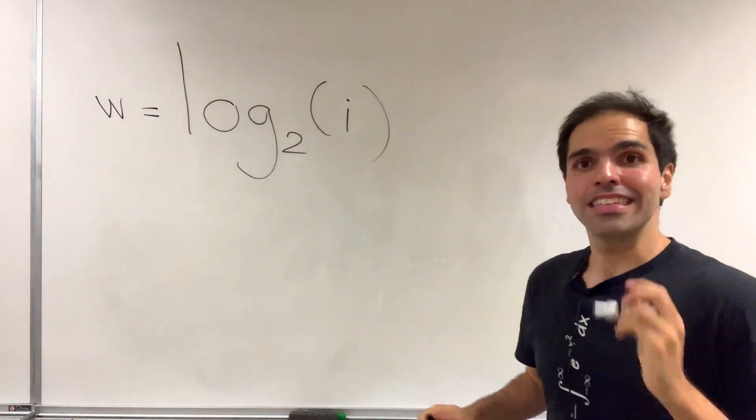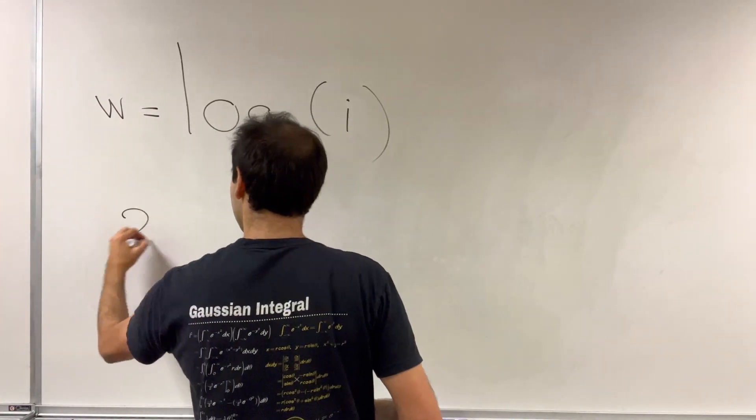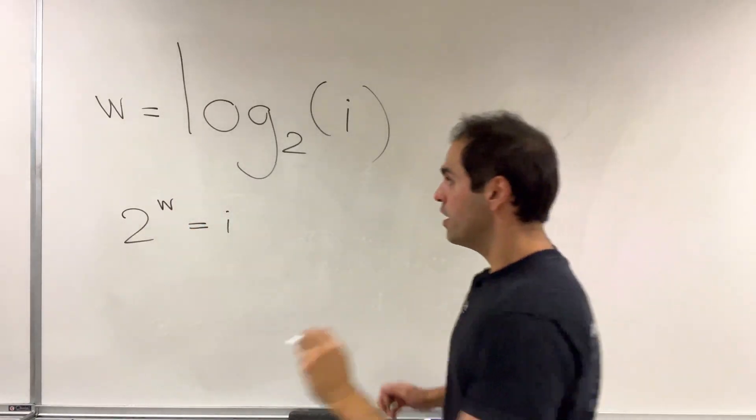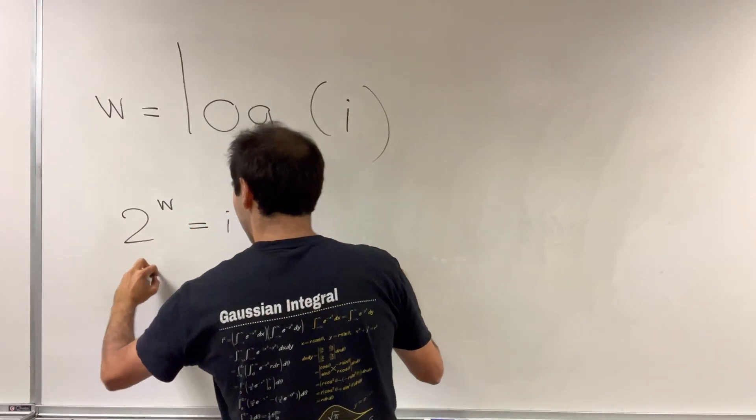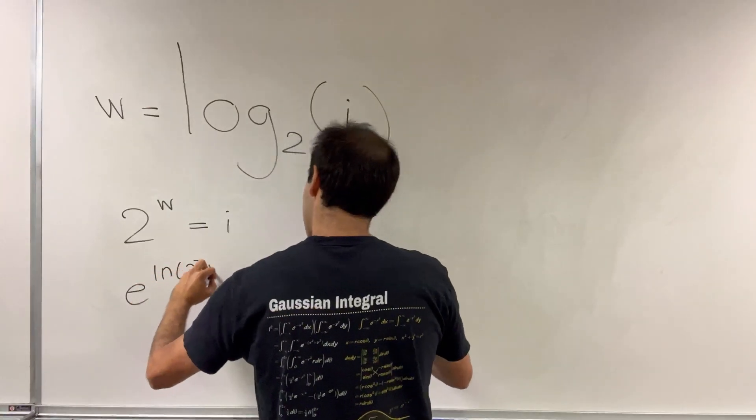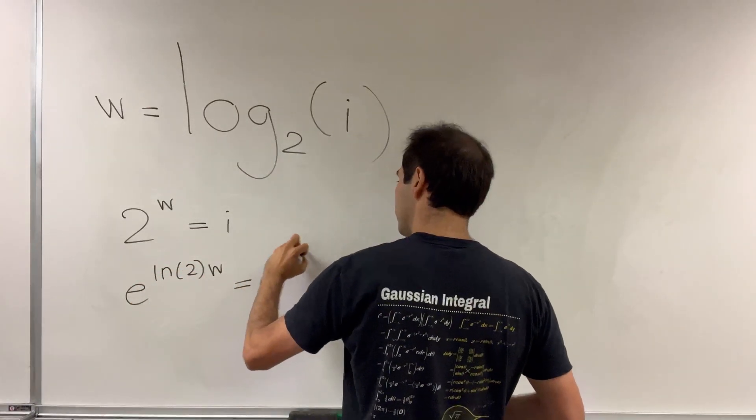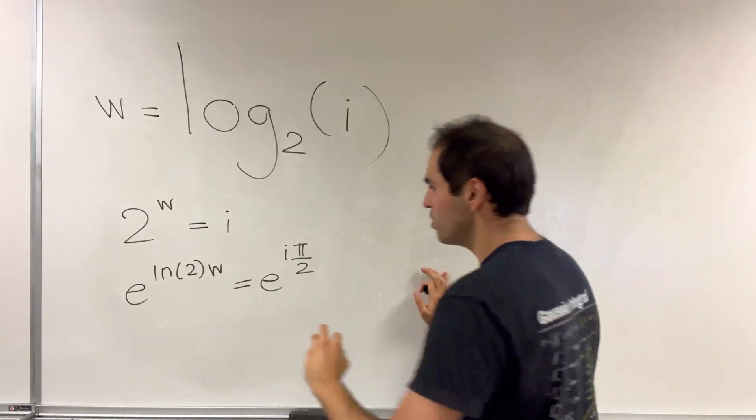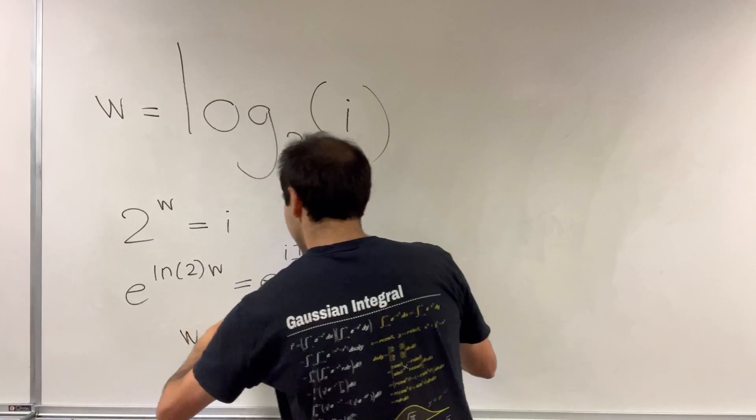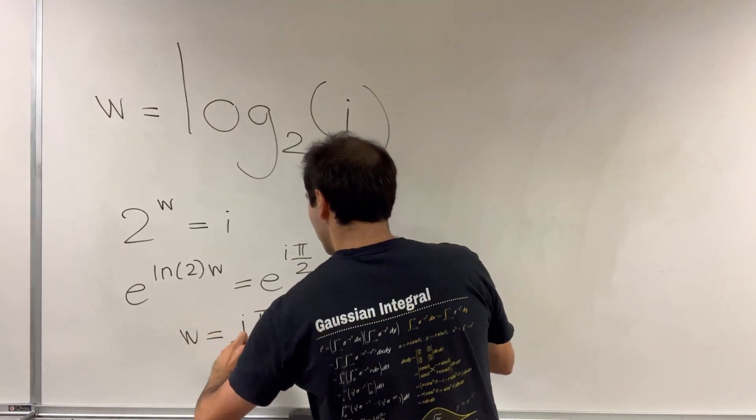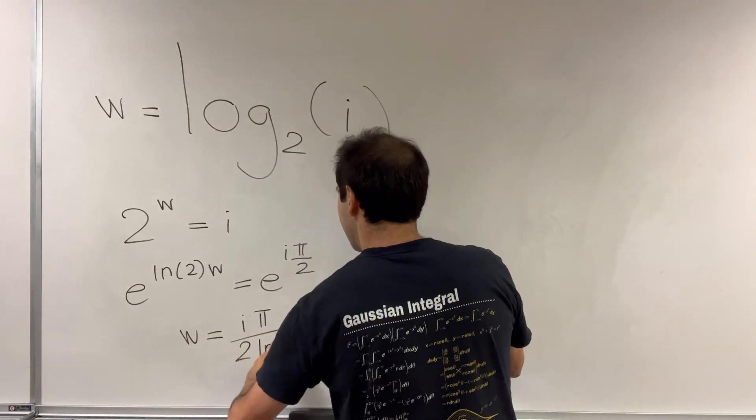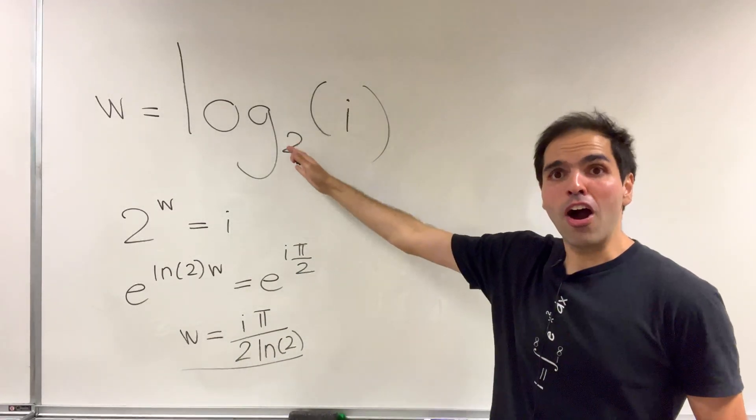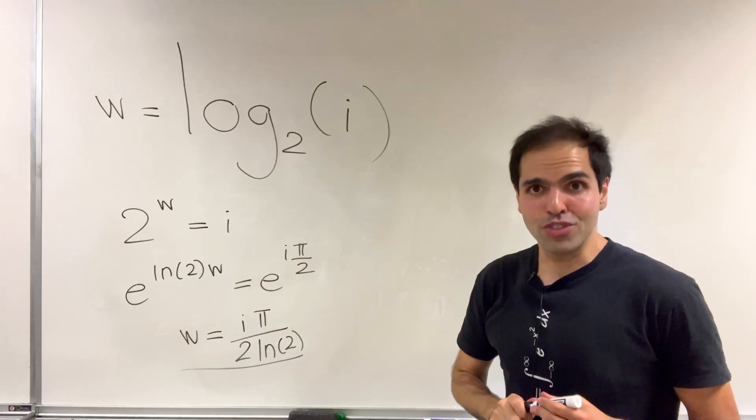What this means is that 2 to the w equals i, so e to the ln of 2w equals e to the i pi over 2 plus 2 pi m i. And so w is just i pi over 2 divided by ln of 2, which is different from log base i of 2.